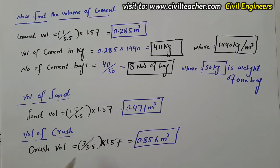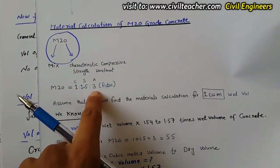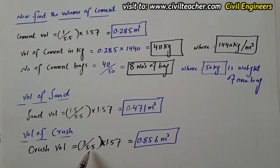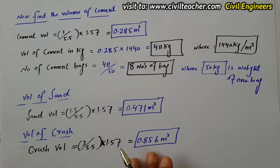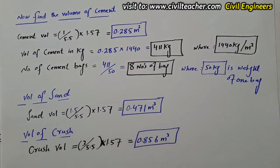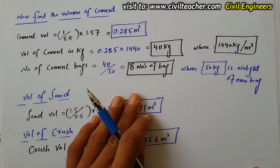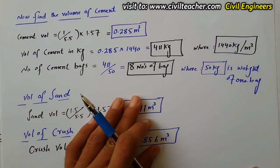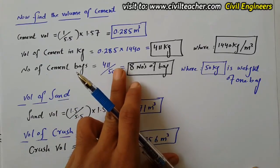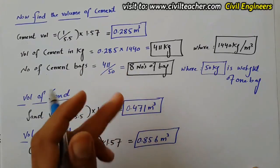Now find the volume of crush or aggregate. Crush volume equals 3 divided by 5.5 multiplied by 1.57, which equals 0.856 cubic meters. Here 3 is the aggregate ratio and 5.5 is the sum of ratio. These are the calculations to find the quantity of material in M20 grade of concrete for one cubic meter.